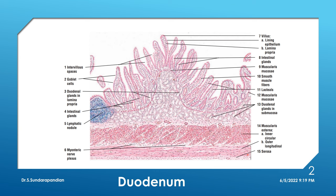The identification point for duodenum is the presence of villi. These are the surface projections of mucosa called villi. In duodenum we have more numbers of villi. Mucosa consists of lining epithelium supported by a layer of connective tissue called lamina propria, then muscularis mucosa.